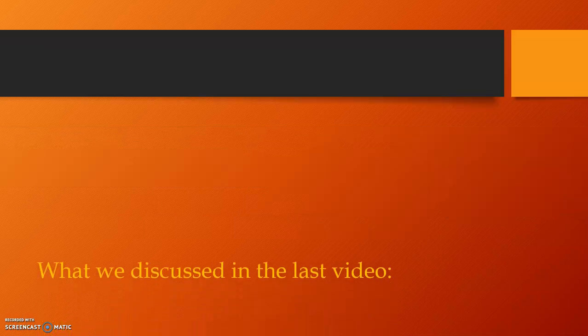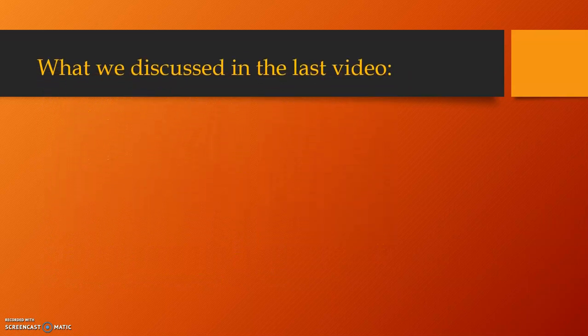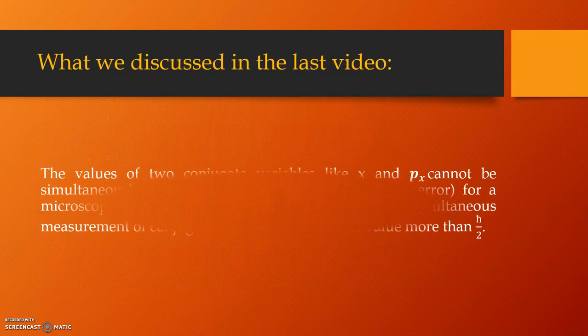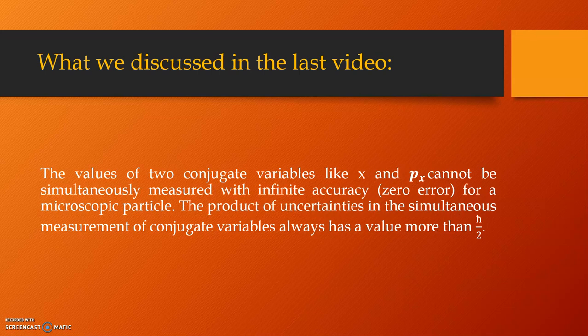Let us take a brief recap of what we have already discussed in the last video. What we had seen was that the values of two conjugate variables like x and px, i.e. the position and momentum, cannot be simultaneously measured with infinite accuracy for a microscopic particle. The product of uncertainties in the simultaneous measurement of such conjugate variables always has a value more than h-bar by 2.